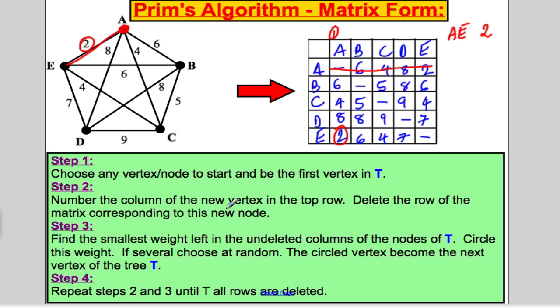Step three says find the smallest weight left in the undeleted columns of nodes of T. The only node in T is A, so this is the only column I'm interested in. Circle the smallest, which is the two. That tells us that A, E of two is in my spanning tree. The circled vertex becomes the next vertex of the tree, and it says go back to step two. Label and number the new vertex in the top row, so I'm going to label E number two. Delete row E apart from the thing you've circled. The next entry is E, C, which is of weight four.